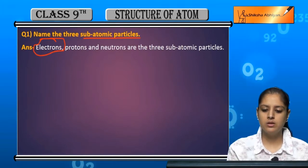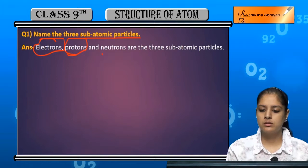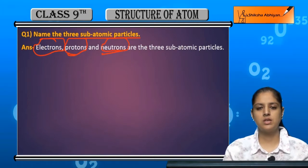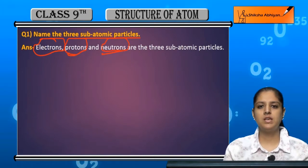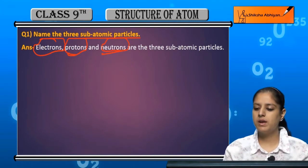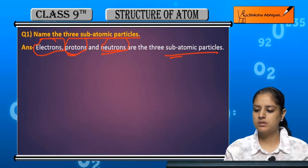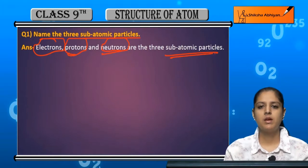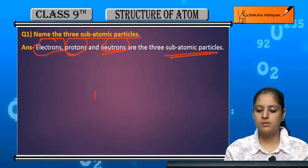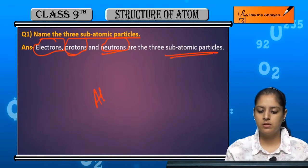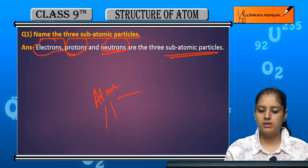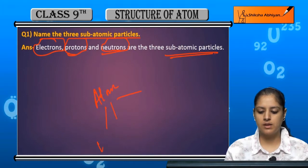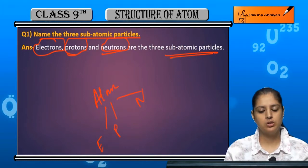Electron, proton, and neutron. Yeh teen subatomic particles hain. The atom ko hum in tino mein divide karte hain — electrons, protons, and neutrons.